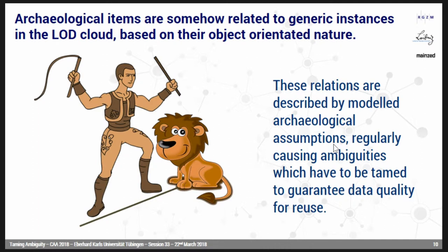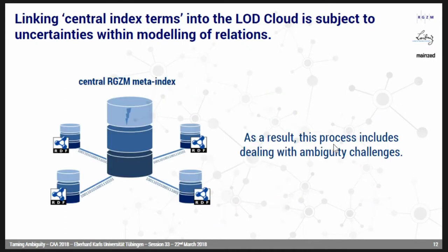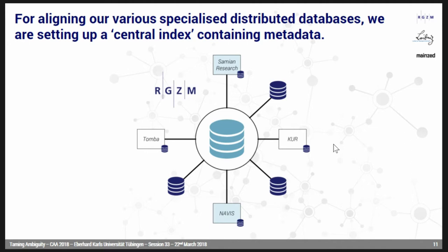To make this more concrete, I will show some examples we found in our RGZM main databases. One of the main core architecture elements of the IT in RGZM is that we have, for more than 20 years, specialized databases — we call them Fachdatenbanken — hanging around with no central index on them. And by starting to build this kind of infrastructure, you run immediately into the problems of reliable data, how to link up, and how to ensure the quality of the linkage.